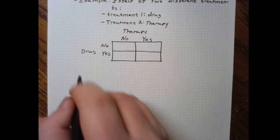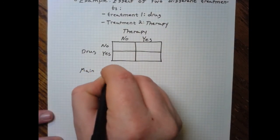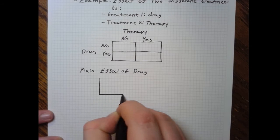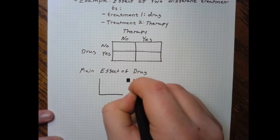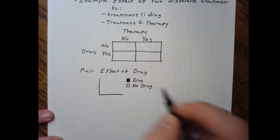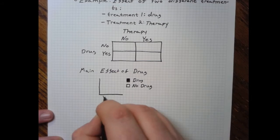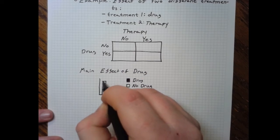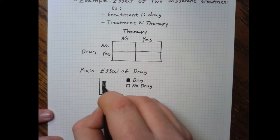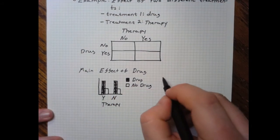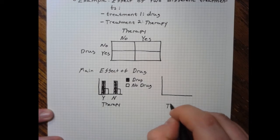Let's graph out hypothetical results using a bar graph where filled bars correspond to individuals given the drug and open bars to those not given the drug, with therapy on the x-axis and treatment efficacy on the y-axis. If it was just the drug itself doing something, individuals who got the drug did well regardless of therapy, but if you weren't given the drug, you didn't do well. So we see the drug is doing something, but the therapy isn't.